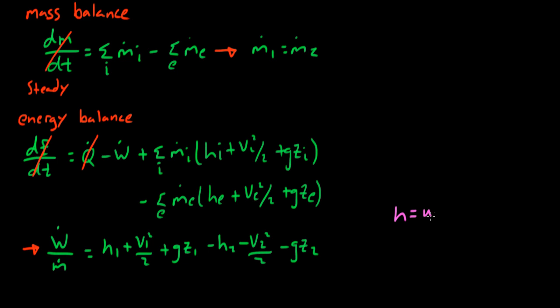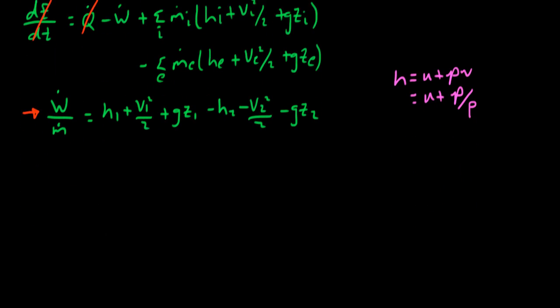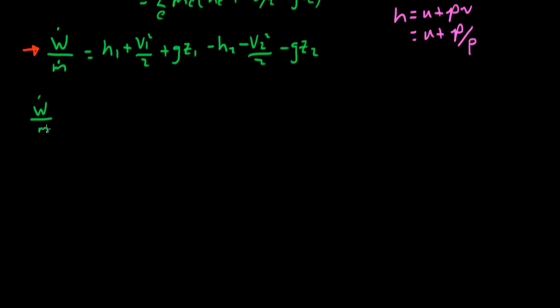We substitute the definition for specific enthalpy, H equals U plus P over rho. For an incompressible flow under these conditions, the internal energy remains constant and cancels out.